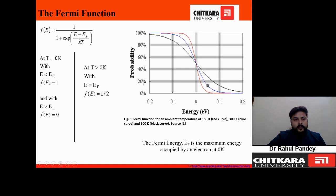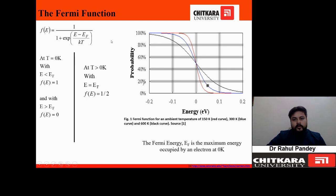The outcome of this presentation is that viewers will be able to understand the Fermi-Dirac distribution function, evaluate the position of the Fermi level if carrier concentrations are given, and understand the concept of the quasi-Fermi level. The first topic is the Fermi function. Electrons follow the Fermi-Dirac distribution function, and its qualitative plot is shown. We will solve this function for three different cases: two at T equal to zero Kelvin and one at T greater than zero Kelvin.